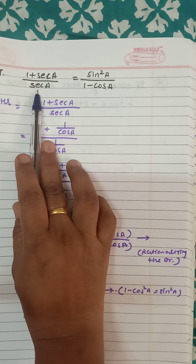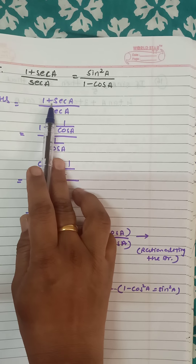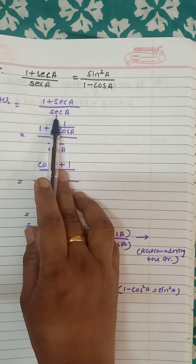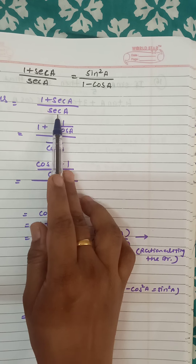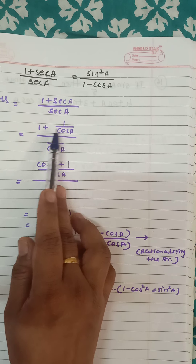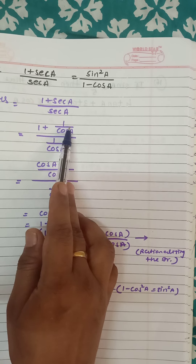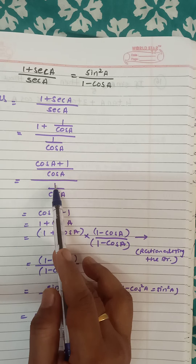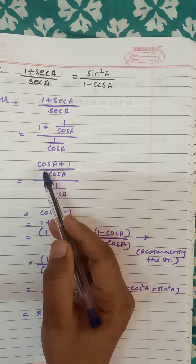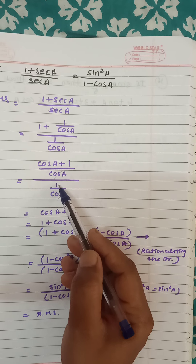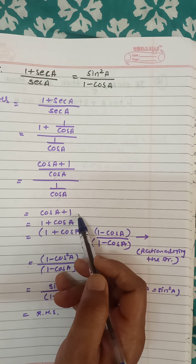Question number 15: (1 plus sec a) upon sec a is equal to sin²a upon (1 minus cos a). Left hand side is (1 plus sec a) upon sec a. Sec means we convert to cos: sec is 1 upon cos a. This is an addition of fractions, so add to get (cos a plus 1) upon cos a, divided by 1 upon cos a. Both denominators are the same, they cancel.